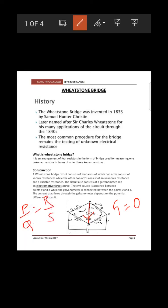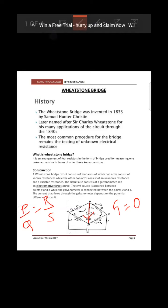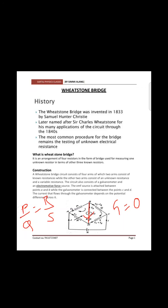This principle explains the balanced condition: if galvanometer shows no deflection (zero current through it), then P/Q = R/S. This is the principle of the Wheatstone bridge. The derivation/proof for this condition can be verified using KVL and KCL.